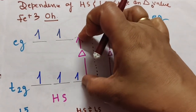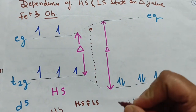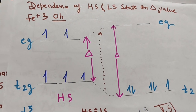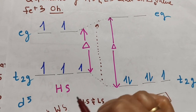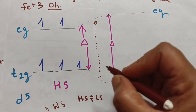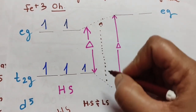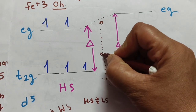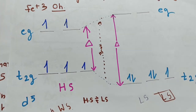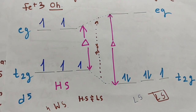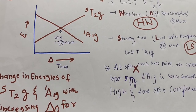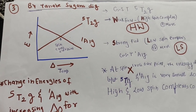In spin crossover, when any external stimuli — light, temperature change, pressure — are applied, the high spin state can change to low spin or vice versa. At an intermediate energy point, both high spin and low spin complexes can coexist in equilibrium.